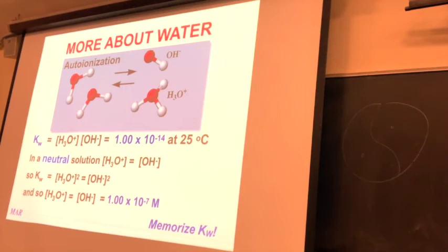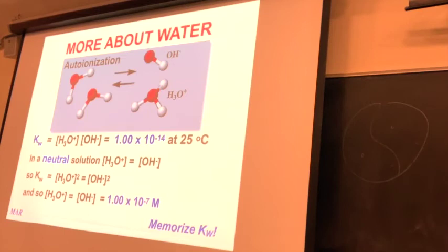If you have a solution with a hydronium concentration of 10⁻⁸ mol/L, you can find the hydroxide using Kw. Kw = [H3O+][OH-] = 1.00 × 10⁻¹⁴. So 10⁻¹⁴ divided by 10⁻⁸ gives [OH-] = 10⁻⁶ mol/L. This is a nice way to use Kw — if you have hydronium, you can find hydroxide, and vice versa. Kw is valid as long as you're at 25°C room temperature. The 7 in 10⁻⁷ is related to pH = 7, but the key value is 10⁻¹⁴.